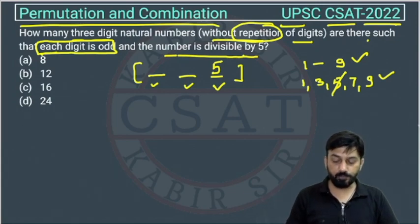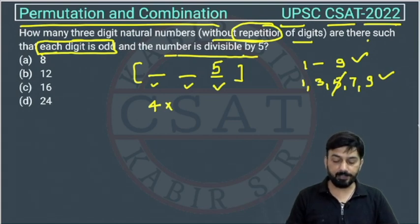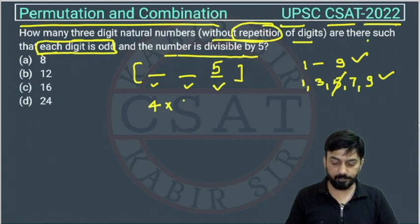At the first place, out of four any digit can come. At the second place, one digit is already used from these four, so the remaining is three. Out of those three, any digit can come at this place.